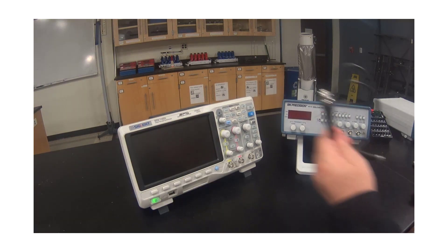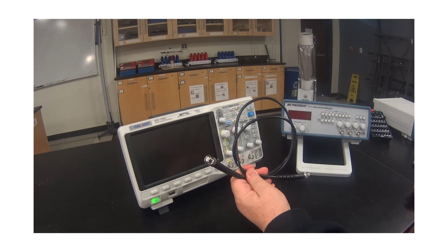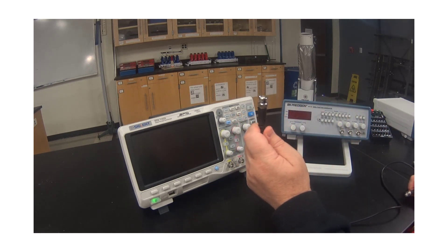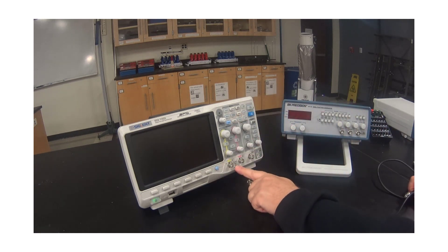We will connect the devices with a BNC cable, also known as a coaxial cable. Connect one end to the input for Channel 1 on the Oscilloscope, also known as the X-Input.